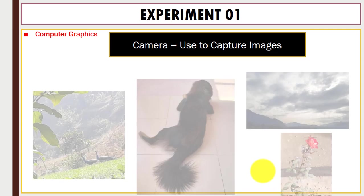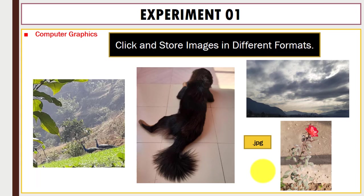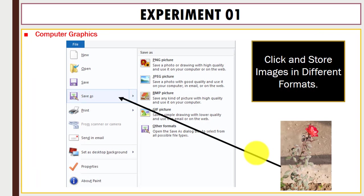Next is the camera. Using a camera we can capture images, and you can see here different types of images that you can capture. Now we have to click and store images in different formats. Right now on the screen we have different images and they are in .jpg format.